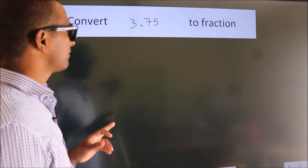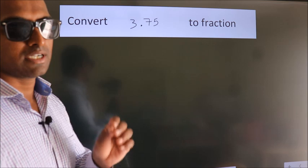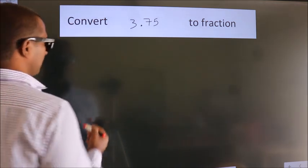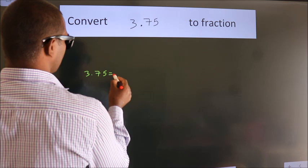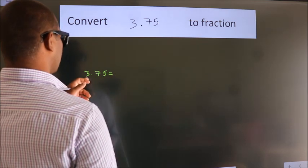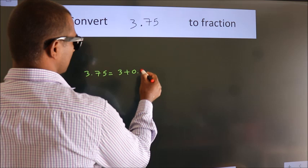Convert 3.75 to fraction. How do we convert? Given is 3.75. First we should break this into 3 plus 0.75.